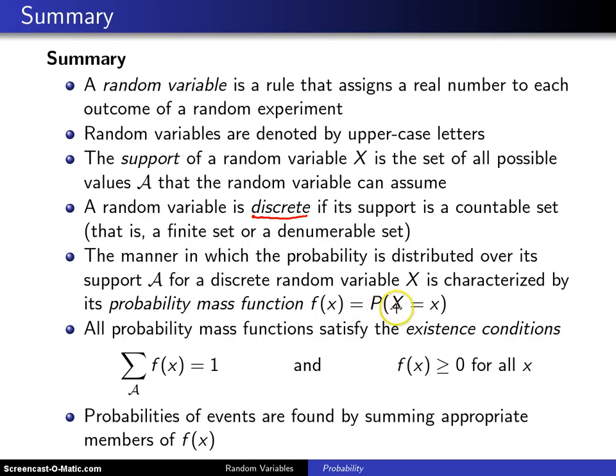and that is the probability that the random variable x takes on the value little x. There are two existence conditions that probability mass functions must satisfy, that is, they have to sum to 1 over their support, and they have to be greater than or equal to 0 for all values of x.